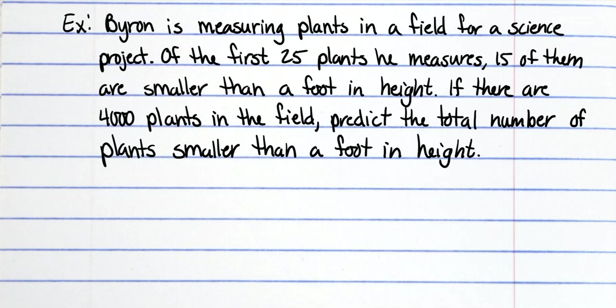Alright, so what it first says is that 15 out of the 25 are smaller than a foot, so 15 out of 25 are smaller. So the smaller ones over the total—you always have some way of writing the words out—so we're going to put the smaller plants over the total amount of plants, and there are 15 out of 25 of them that are that way. Then the other one, it's asking if there are 4,000 plants in the field, predict the total number of smaller plants. So if there are 4,000, that's our total, right? That is not how many are smaller, we're trying to figure that out, so that's what we don't know.